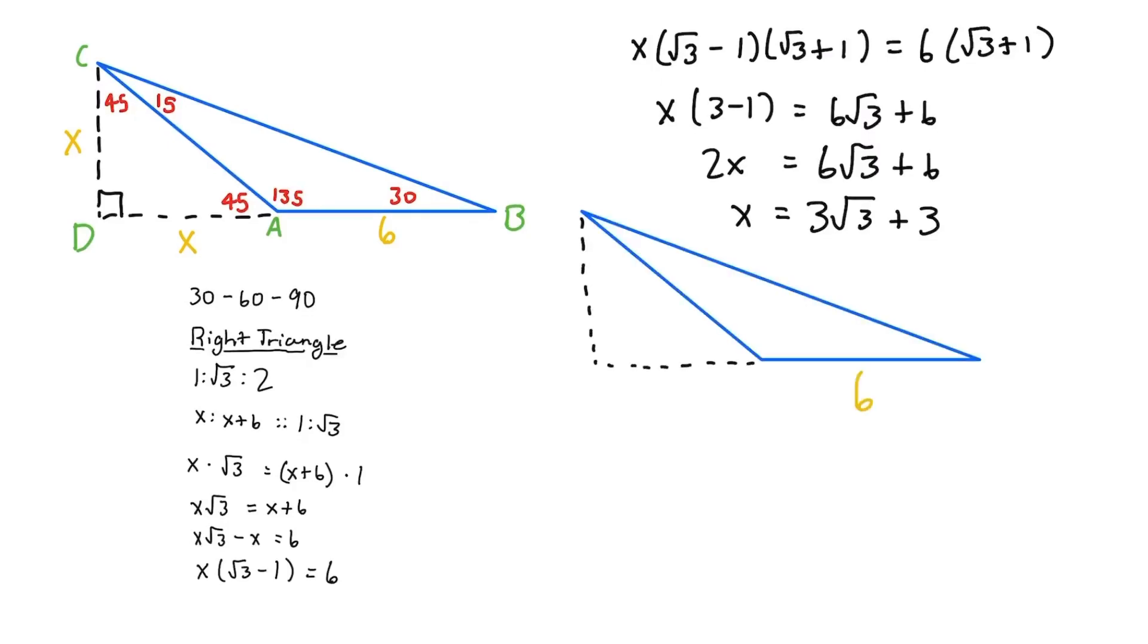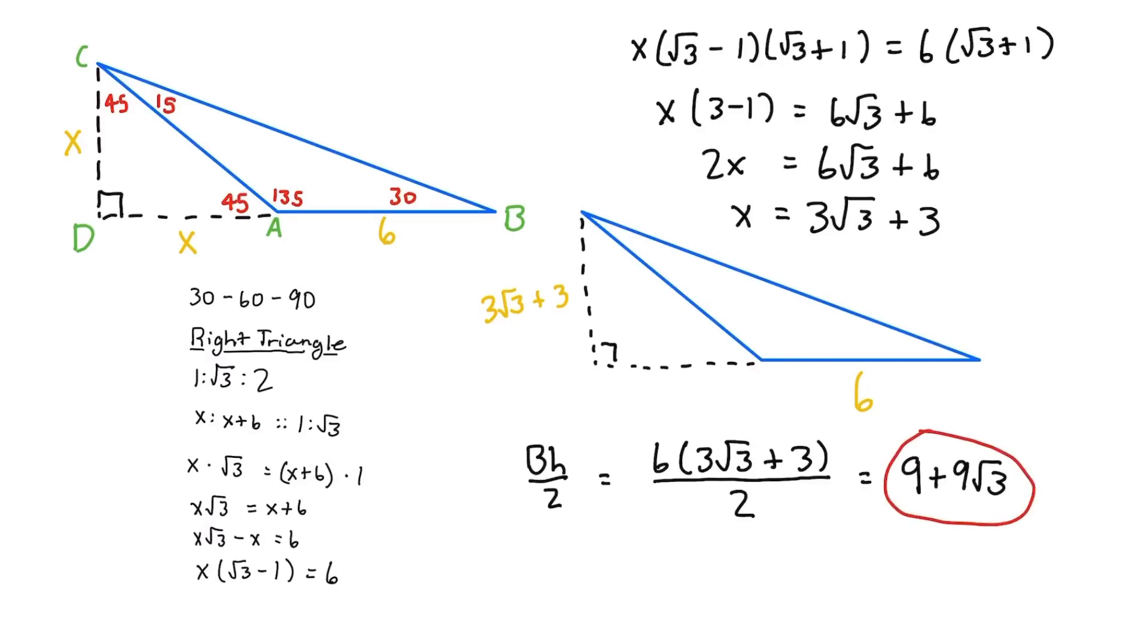So here we have our extended triangle. We have our base, 6, and our height, 3 root 3 plus 3. The formula for the area of a triangle is base times height over 2. So for us, it's 6 times 3 root 3 plus 3 over 2. This is equal to 9 plus 9 root 3. And that is the correct answer.